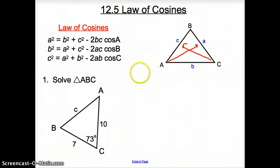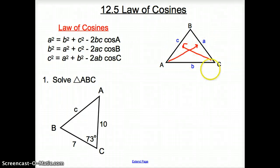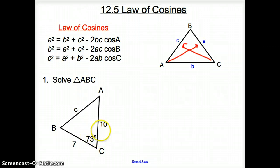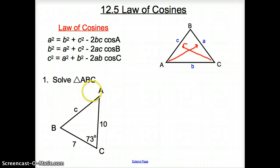Remember, the Law of Sines is used when we are given an angle and that same side, and then a different side or a different angle. But with the Law of Cosines, when we look at problem one, we first have two sides and then an angle in between — this angle does not belong to any of those sides. So we get to use the Law of Cosines.